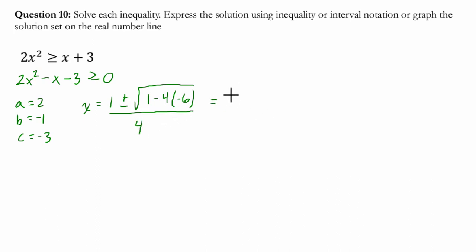And that's going to give me basically two results. It's 1 plus or minus the square root of 25 over 4. So in the first result, it's 1 plus 5 over 4, which is 6 fourths, or 3 halves. Or x could be 1 minus 5 over 4, which equals negative 4 over 4, which is negative 1.